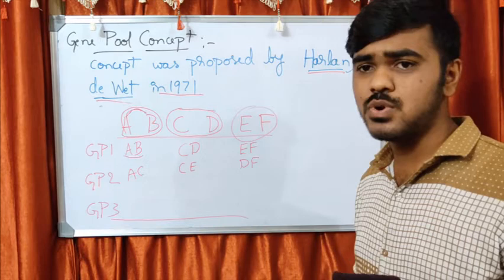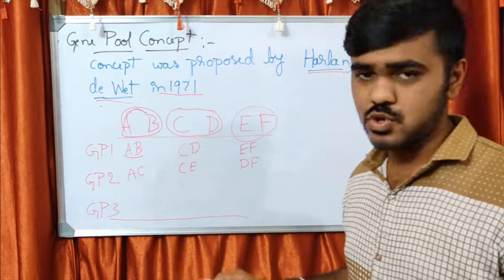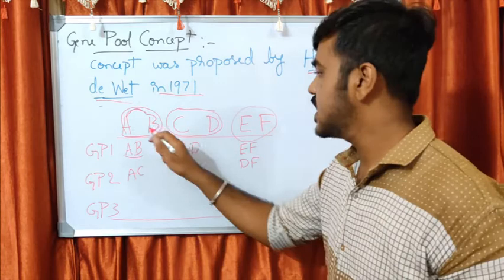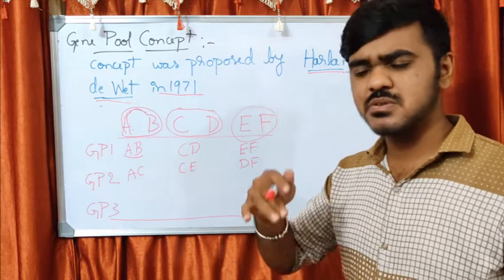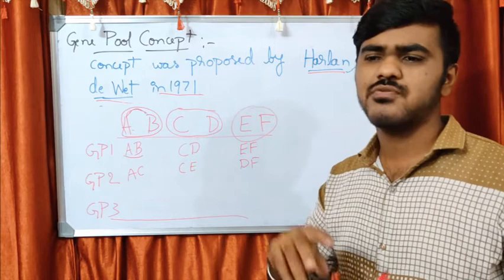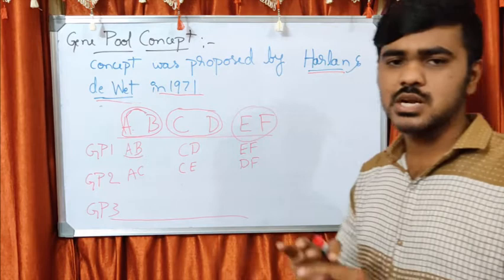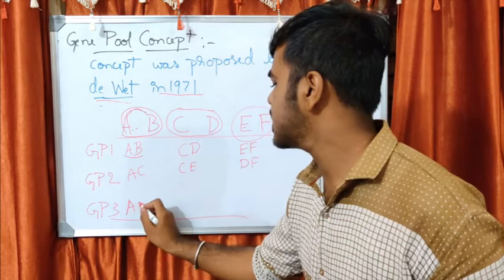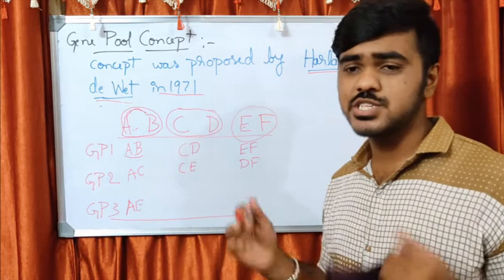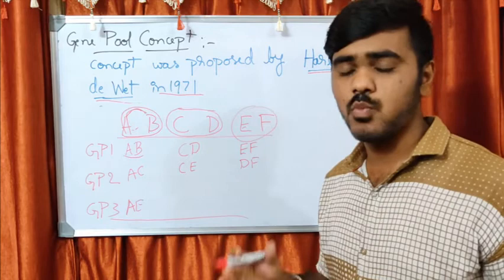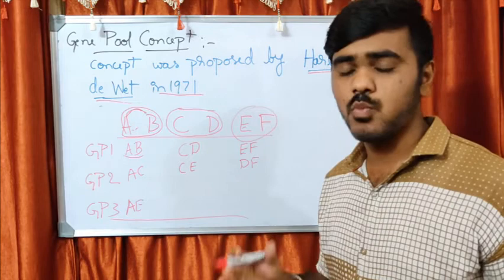For Gene Pool 3, these individuals actually cannot be crossed easily. For example, A and E cannot be crossed, but with modern technology there may be an extremely low percentage of success — perhaps 0.0001%. Such a low success rate means A and E come under the tertiary gene pool. In this gene pool, the alleles of those individuals can barely be combined — there is far more failure in such crosses.